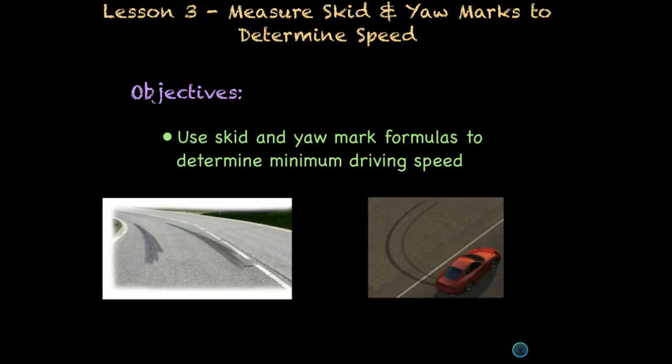As you probably already know, when a driver hits the brakes really hard, it locks them up and a skid mark is made. When the driver first applies the brakes, the skid mark is light and then the mark darkens until the car comes to a stop on its own, or in the case of a collision.